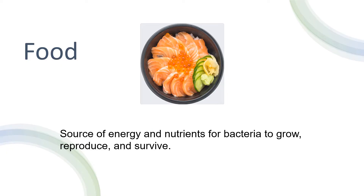Let's start with the first letter, F for food. Food provides a source of energy and nutrients for bacteria to grow, reproduce, and survive. In order to prevent the growth of harmful bacteria, it is important to ensure that food is handled and stored properly. This includes keeping raw and cooked foods separate, using clean utensils and equipment, and properly washing your hands before and after handling food. Some high-risk foods are moist protein-rich foods such as seafood, cooked rice, and dairy products.